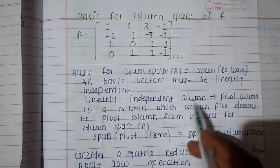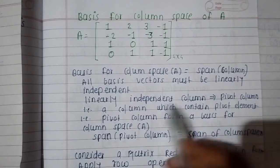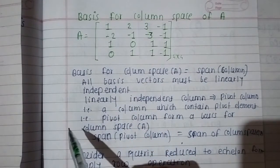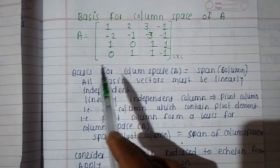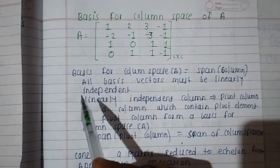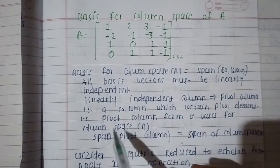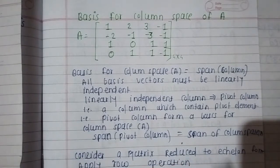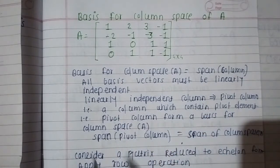Linearly independent columns means the pivot columns. A pivot column is one where the first non-zero entry is one — the leading one. The pivot column is the column containing the pivot element, and this column forms a basis for the column space of A.